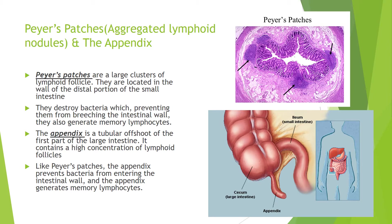Peyer's patches are large clusters of lymphoid follicles located in the wall of the distal portion of the small intestine. They destroy bacteria, preventing them from breaching the intestinal wall, and also generate memory lymphocytes. The appendix is a tubular offshoot of the first part of the large intestine. It contains a high concentration of lymphoid follicles and, like Peyer's patches, prevents bacteria from entering the intestinal wall and generates memory lymphocytes.